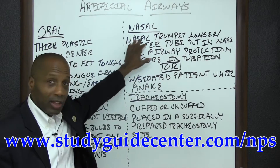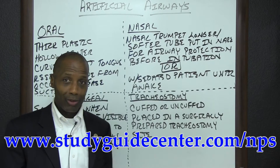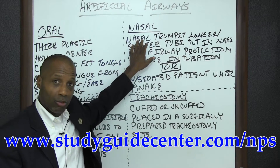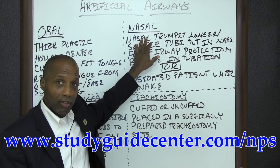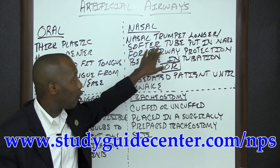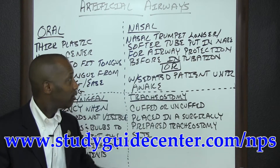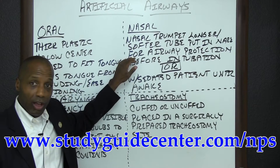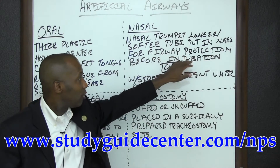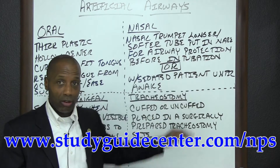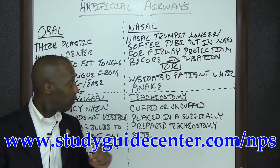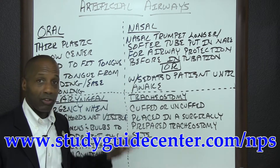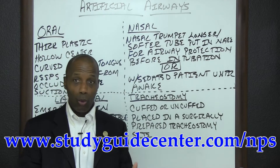With nasal artificial airways, you usually have this nasal trumpet that's a longer and softer tube that's put in what we call the nare. This is done for airway protection before intubation, or when the patient is sedated until that patient is awakened.